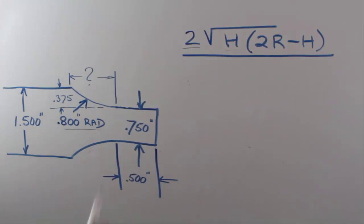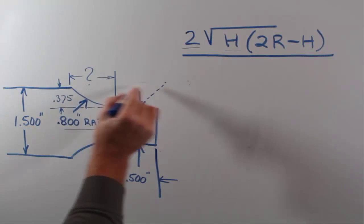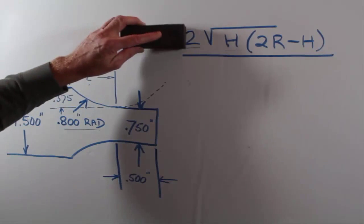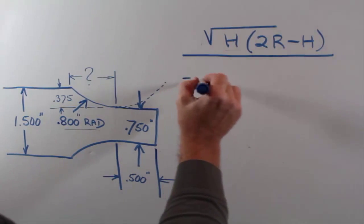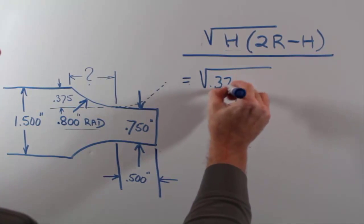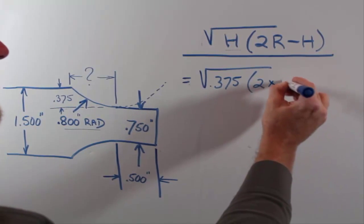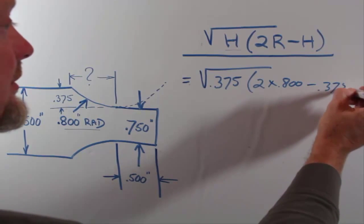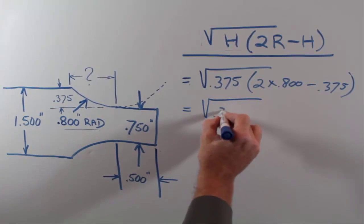The only thing different from our previous example is that we don't have to multiply the formula by two, because we're only calculating half of this distance — half of the chord. So we eliminate the leading two. We're going to take the square root of 0.375 times (two times 0.800 minus 0.375).